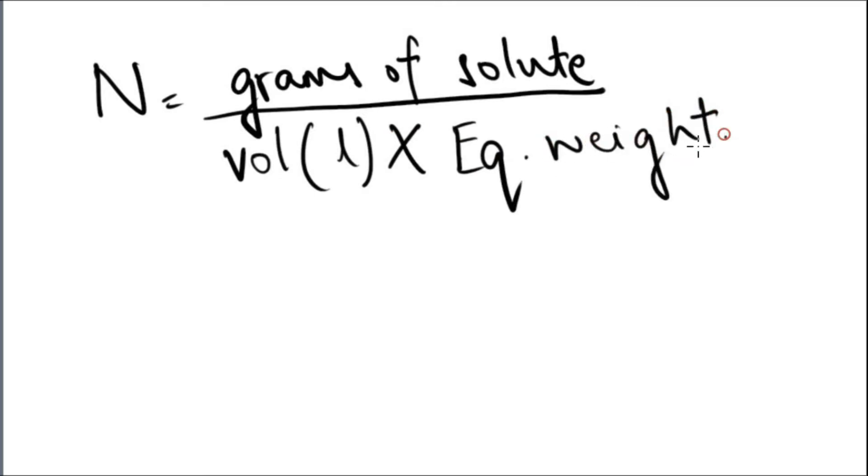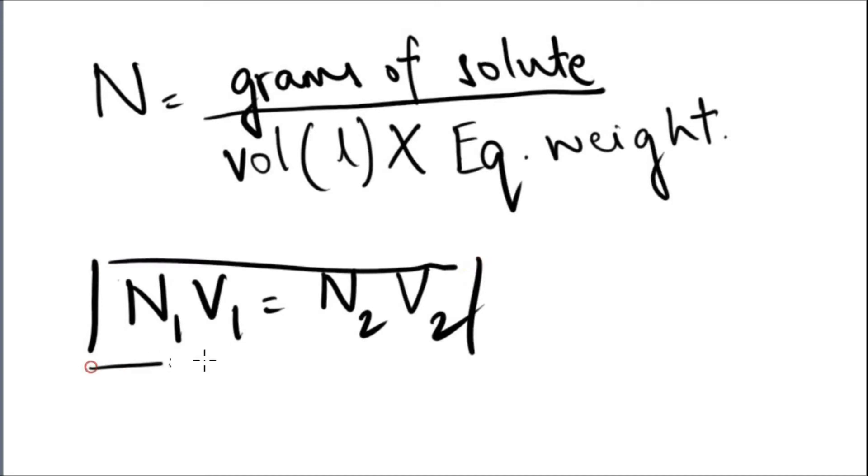Or you can use this formula which is very common when you're doing titration. It is N1V1, which is normality and volume of the first solution or you can say the analyte, is equal to N2V2 of the titrant.